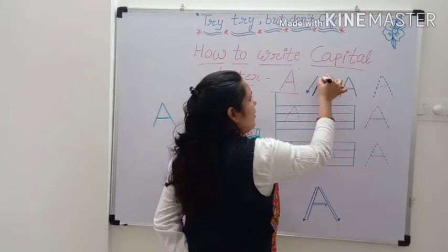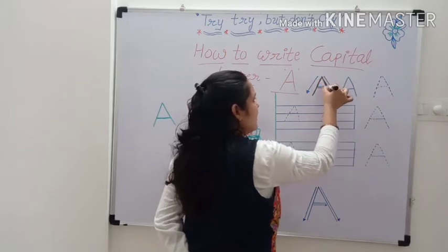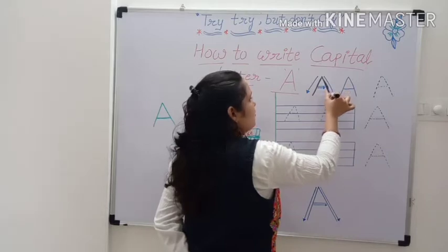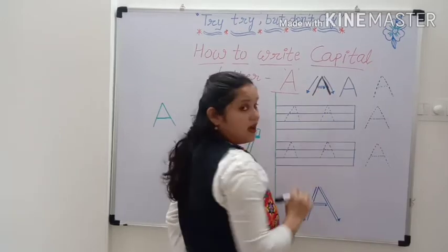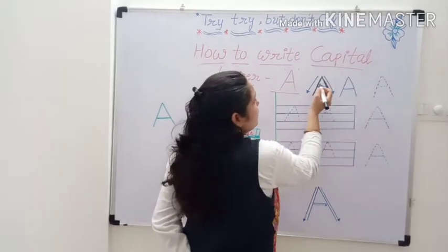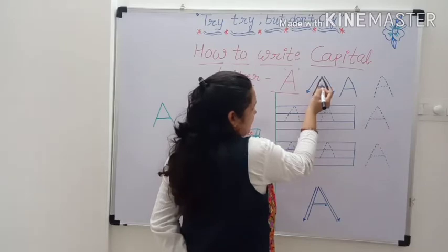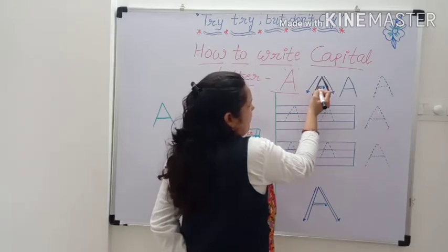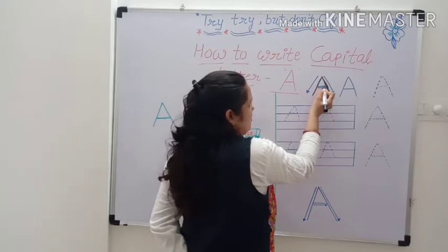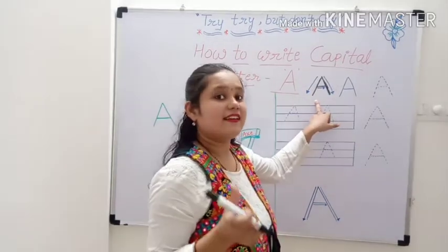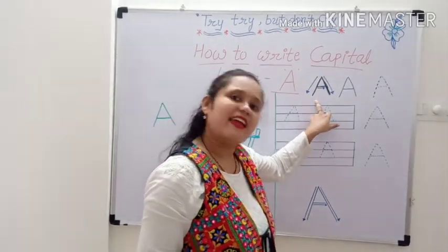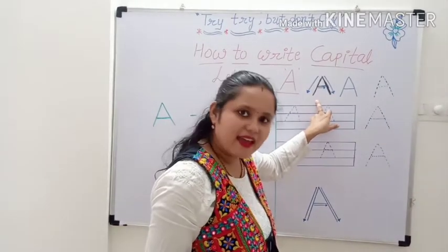Go to the top. Draw another slanting line down to the opposite side. Now go a little below the middle and draw a line across. Done. This is letter A.